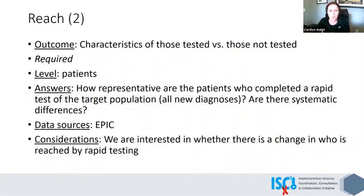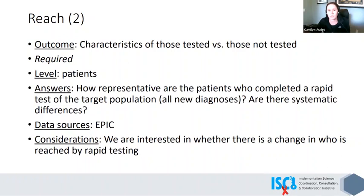We also think it's very important, particularly in a pilot phase, to determine whether the characteristics of those who are tested are different from those who are not. Are we potentially not putting the cheek swab in the cabinet for a certain subset of the population? We have seen this with other tests where if somebody comes in appearing to be under the influence of narcotics, perhaps the nurse doesn't want to give them the test at that time because there are other issues to address. Are some people just refusing the test, and what populations are those that are refusing? This answers the question about how representative are the patients who complete a rapid test of the target population, and we would look through Epic to examine those data.